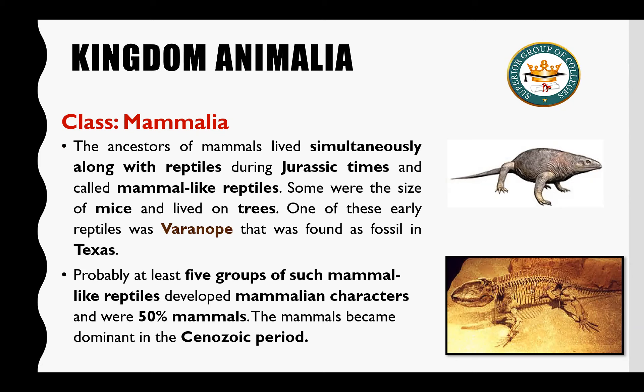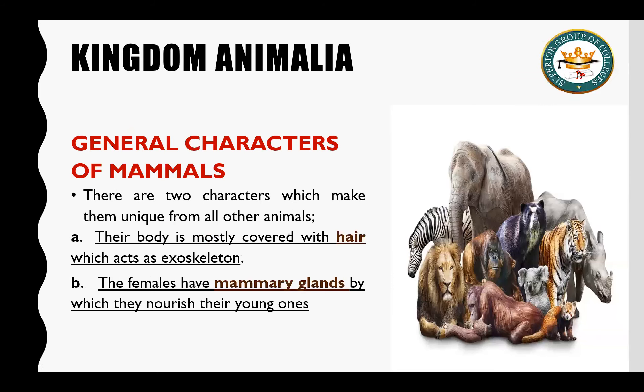ان mammal-like reptiles کے اندر mammalian characters 50% موجود تھے اور ساتھی ساتھ reptilian features بھی موجود تھے، اور یہ Cenozoic period کے اندر dominate کیے جو کہ Jurassic period کے بعد کا time ہے۔ اس کے بعد ہم general characteristics پڑھتے ہیں mammals کے۔